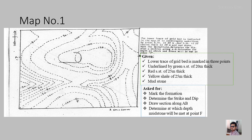What they are asking is: we have to mark all the formations appearing on the map, determine the strike and dip, and trace all the outcrops across the map. Then we have to draw a cross-section along line A–B using a graph sheet. Finally, we have to determine at what depth the mudstone will appear at a given drill hole point, so if someone is drilling there, we answer at what depth they will reach the mudstone.